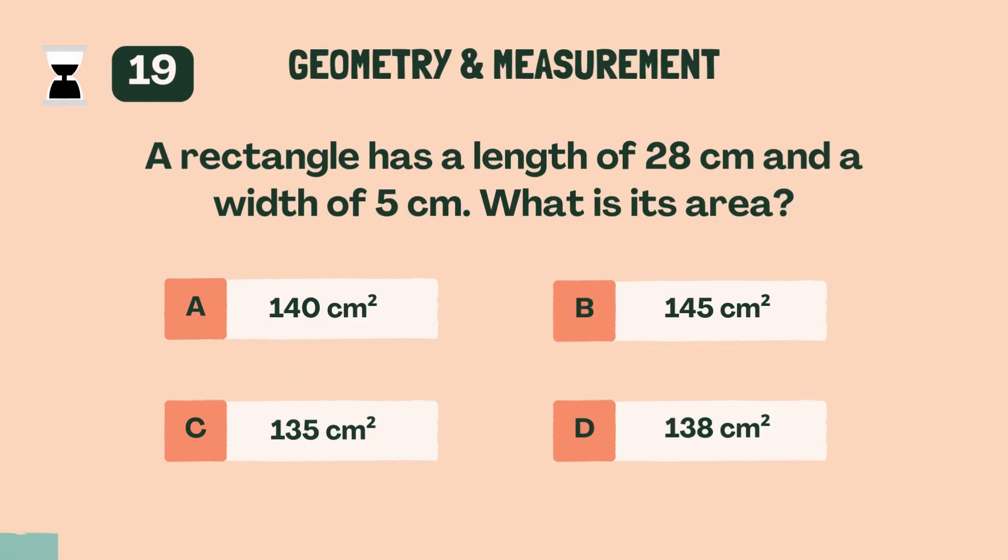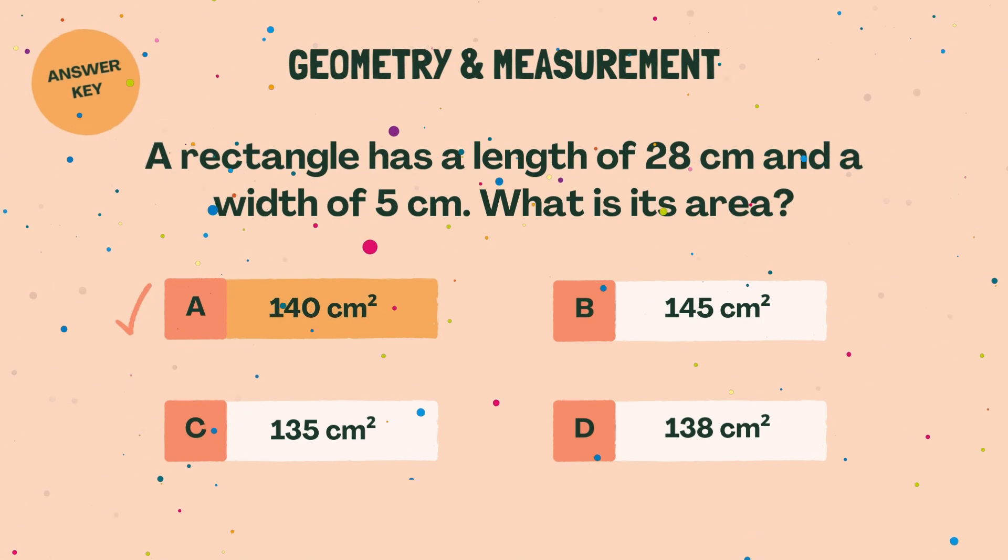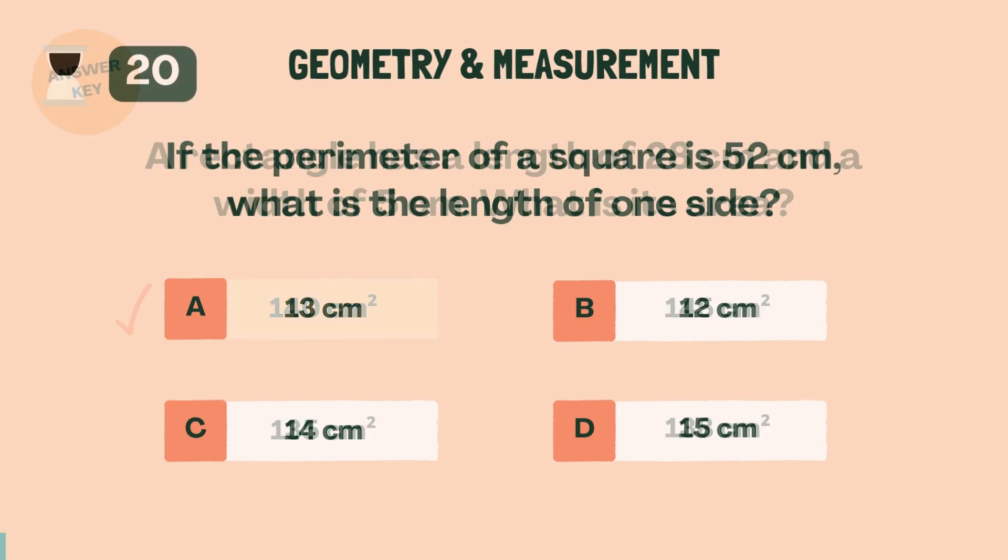A rectangle has a length of 28 centimeters and a width of 5 centimeters. What is its area? A, 140 square centimeters.